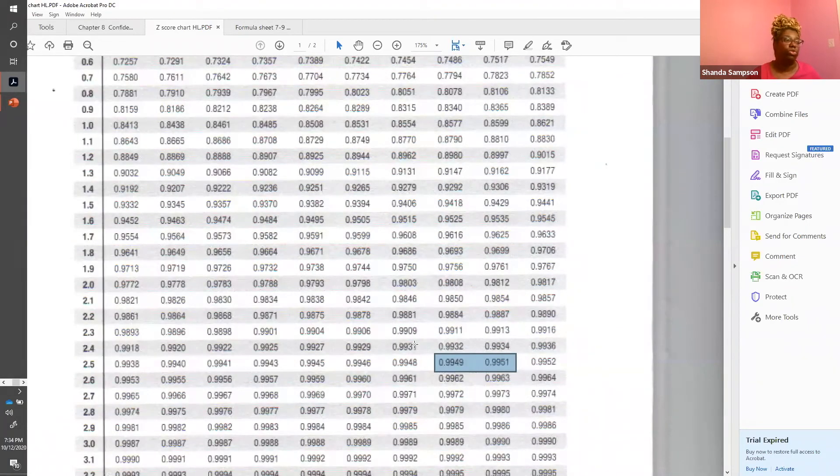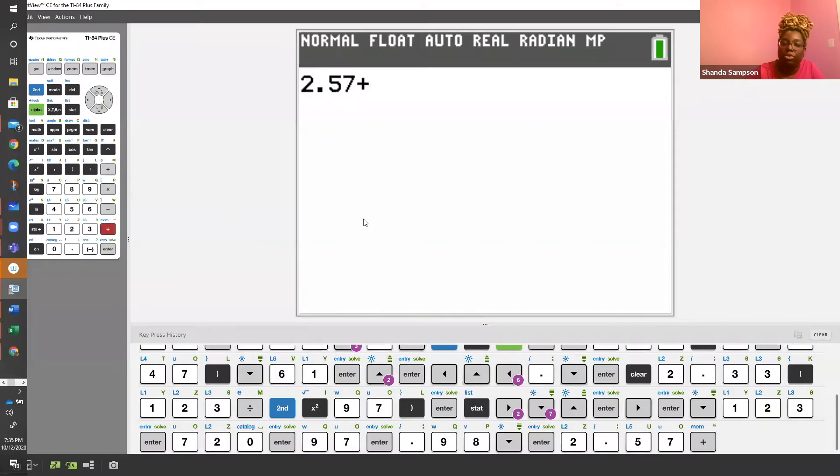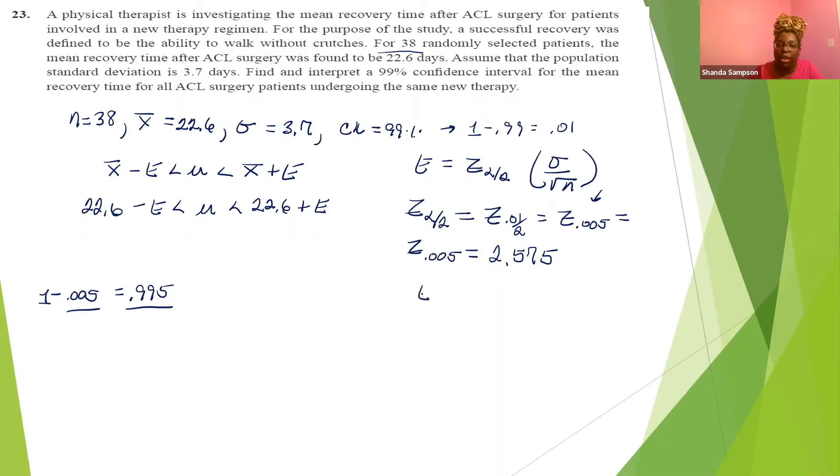One unit away from both of those 2.57 and 2.58. So in this case, this is the only case where your Z will be three digits. So we have 2.57 and 2.58 plus 2.58 equals divided by two, and that's going to give you 2.575. So we have that. Now we have our E is equal to 2.575 times sigma, which we said was 3.7 all over the square root of 38. So it looks like it came out to 1.545564945, and I had to round that up to a 5.